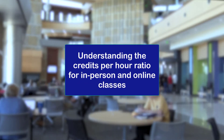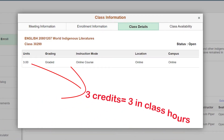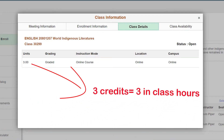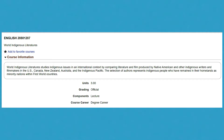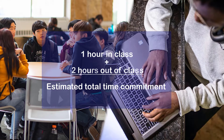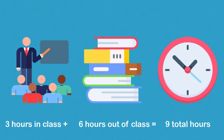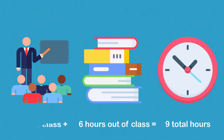Tip number one: understanding the credits per hour ratio for in-person and online classes. There is one in-class hour per credit. Just because a class is listed as three hours a week doesn't mean that's all of the time you'll need to invest. For every hour in class, you'll need to figure about two hours out of class, and then add the two together for the estimated total time commitment. So three hours in class plus six hours out of class equals nine total hours.